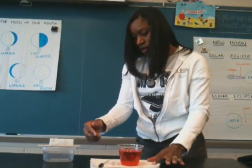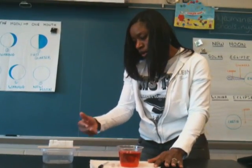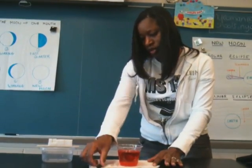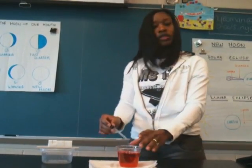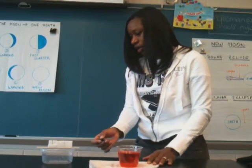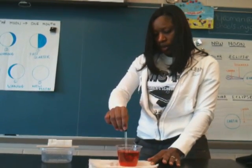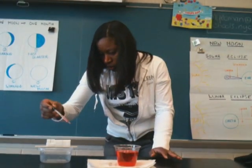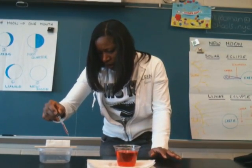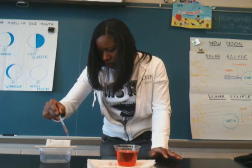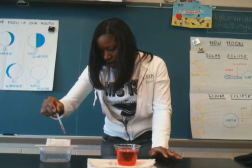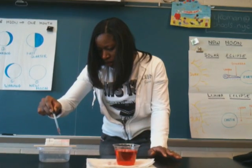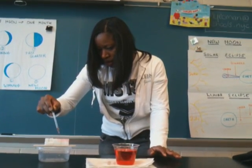We're going to see how water weathering affects our mountains by using these sugar cubes. I have here just plain water with a little food coloring, and we're going to add a few drops — maybe five drops — to each sugar cube in the same spot, and we'll see how it affects them.